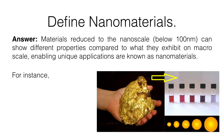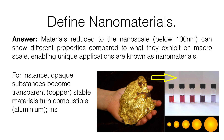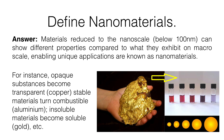For example, opaque copper substances become transparent, stable aluminium material turns into combustible aluminium, and insoluble gold material becomes soluble.